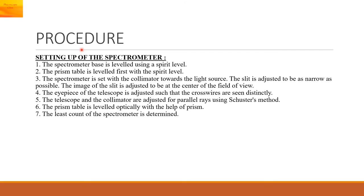Procedure: Setting up of the spectrometer. The spectrometer base is leveled using a spirit level. The prism table is leveled first with the spirit level. The spectrometer is set with the collimator towards the light source. The slit is adjusted to be as narrow as possible. The image of the slit is adjusted to be at the center of the field of view. The eyepiece of the telescope is adjusted such that the cross wires are seen distinctly. The telescope and the collimator are adjusted for parallel rays using Schuster's method. The prism table is leveled optically with the help of prism. The least count of the spectrometer is determined.